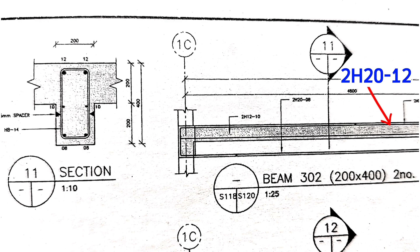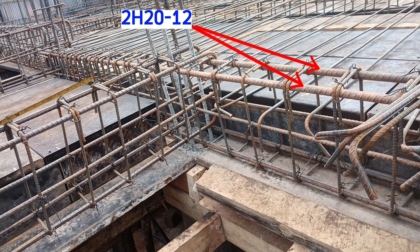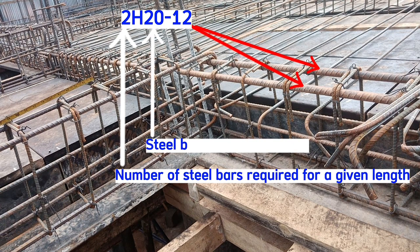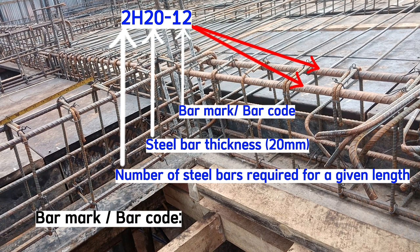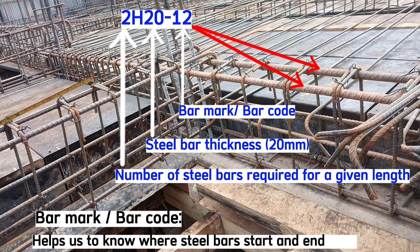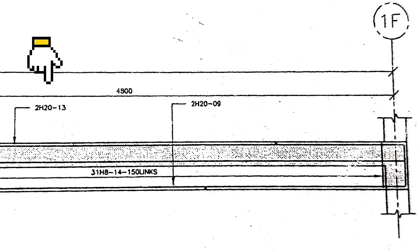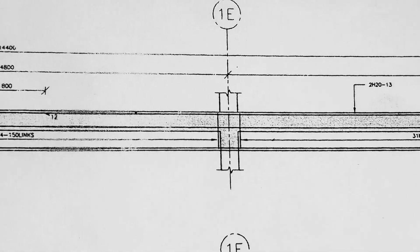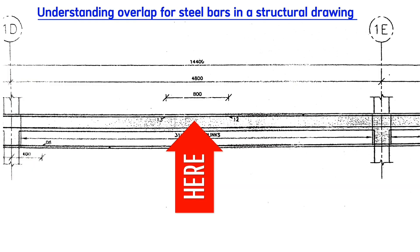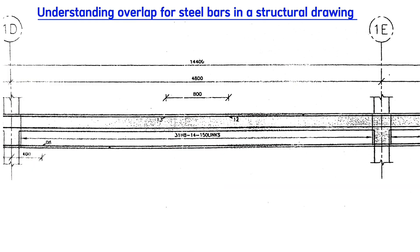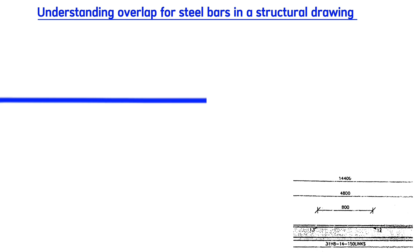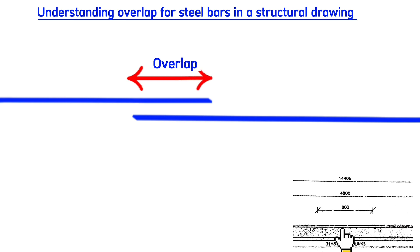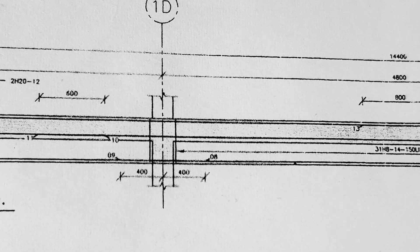Two H20 Code 12 steel bars are shown here. Two means the number of steel bars required, and 20 means the bar thickness of 20 millimeters. Code 12 tells us where the bars start and end. Two H20 Code 13 bars overlap with the Code 12 bars up to the extreme end — this distance between them is the overlap.